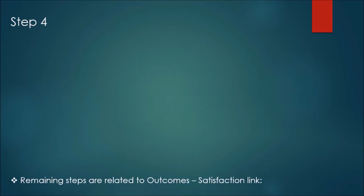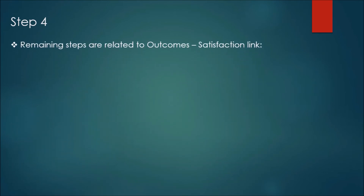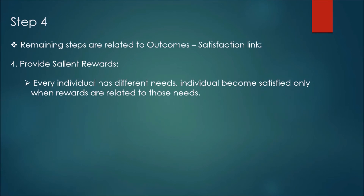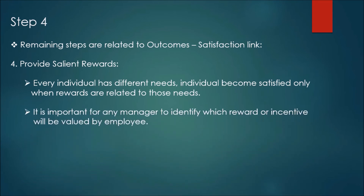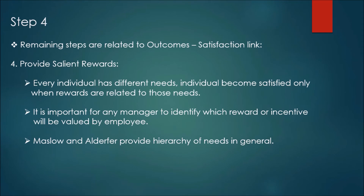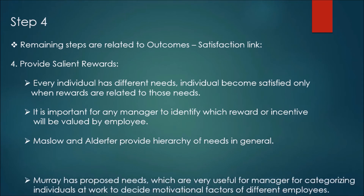Step 4 relates to the outcome-satisfaction link: provide salient rewards. Every individual has different needs, and individuals become satisfied only when rewards are related to those needs. It is important for managers to identify which reward or incentive will be valued by the employee. Maslow and Alderfer provide a hierarchy of needs in general, while Murray has proposed needs that are very useful for categorizing individuals at work to decide motivational factors for different employees.